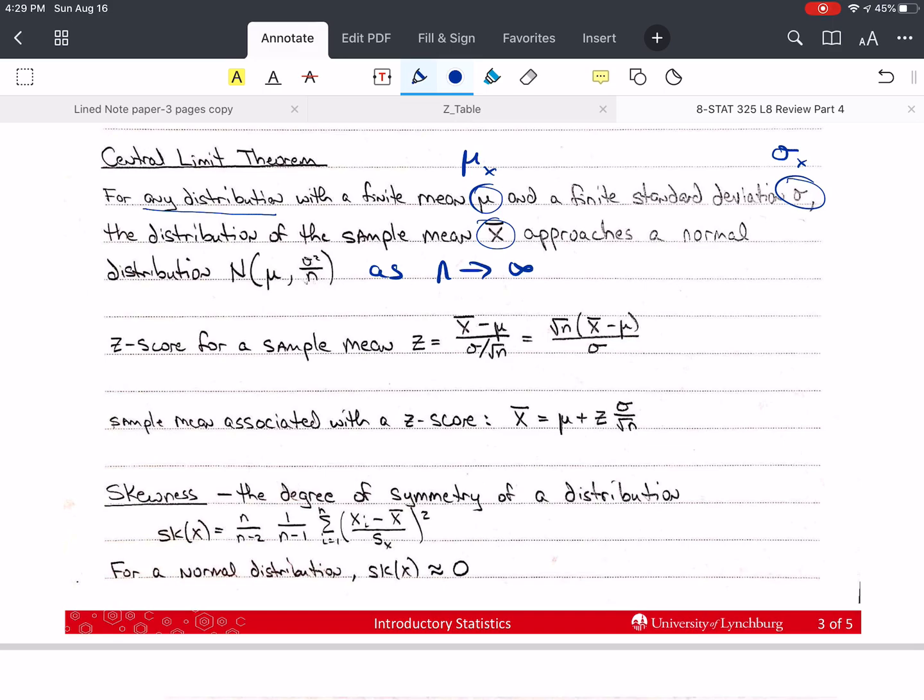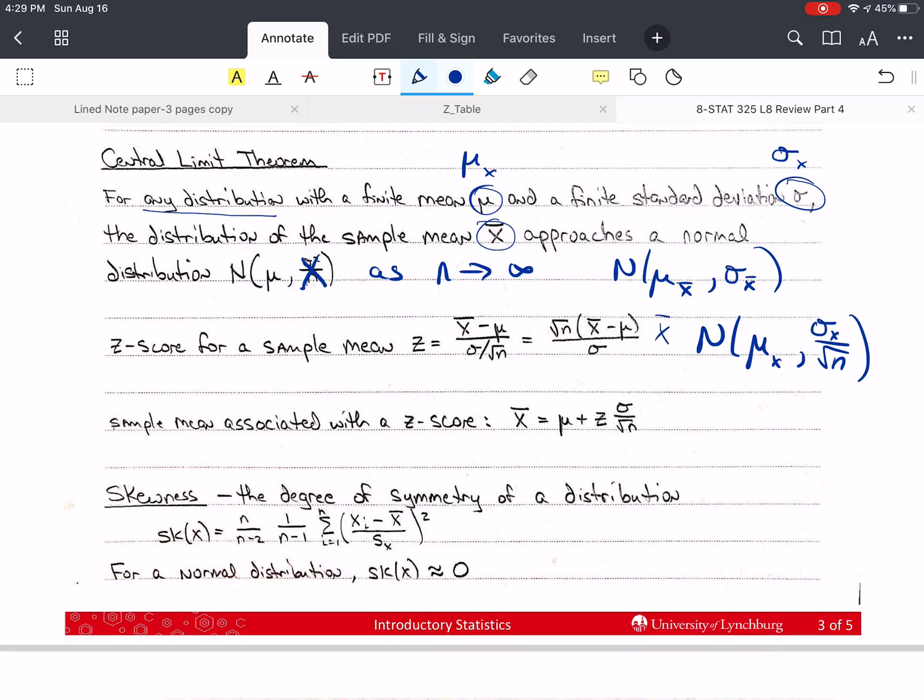So we can say that this is N of mu x bar, sigma x bar. And mu of x bar is simply mu of x. And sigma of x bar is now sigma of x divided by the square root of n. So this is the distribution of x bar as the sample size gets big.